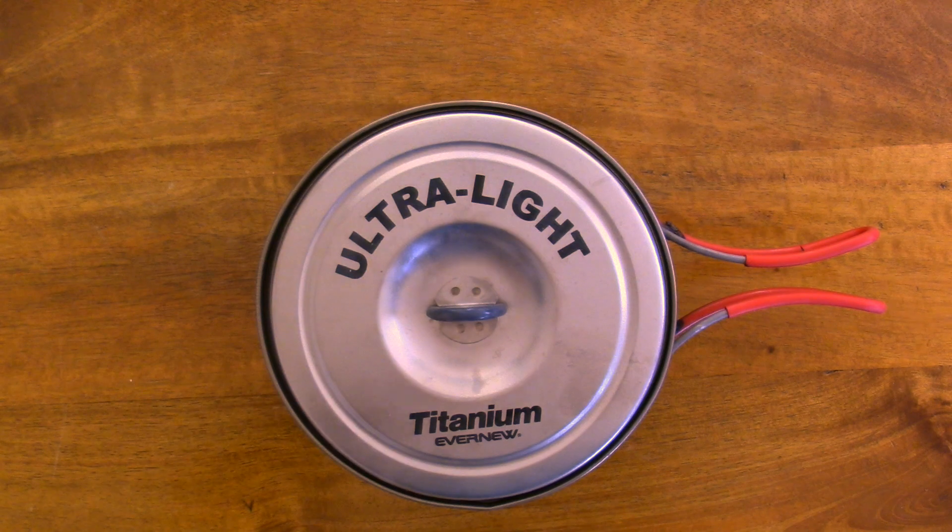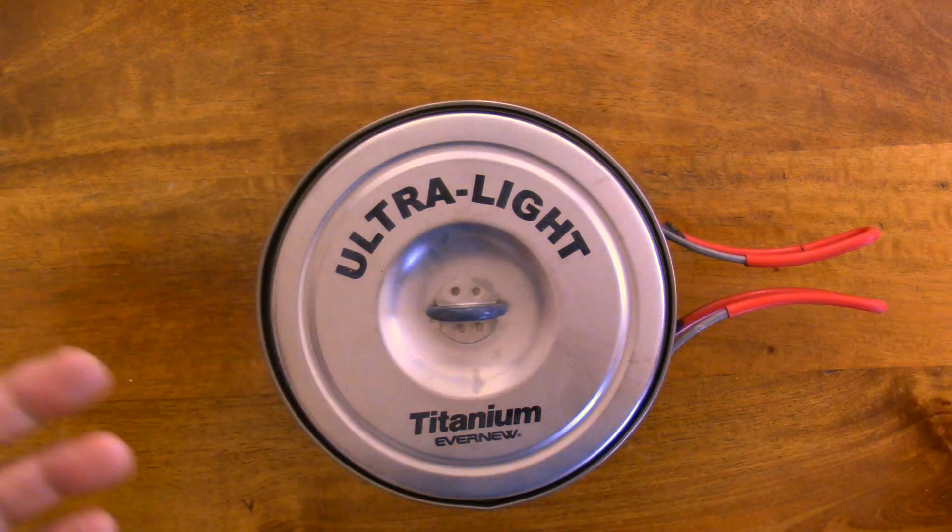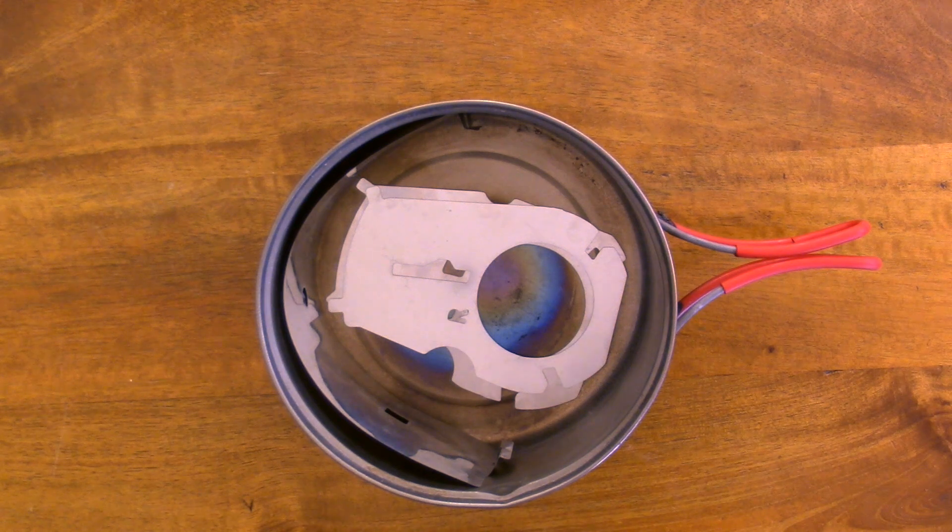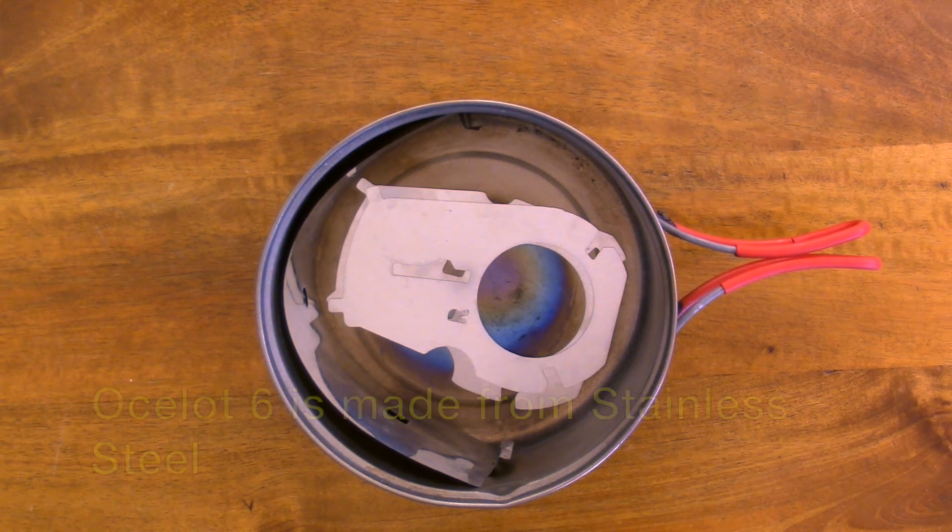Hi, this is John from Flat Cat Gear and what you're looking at, this is an Evernue 1.3 liter pot and inside you can see nested the Ocelot 6.